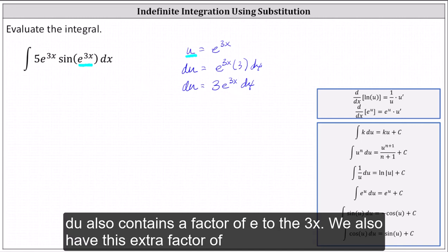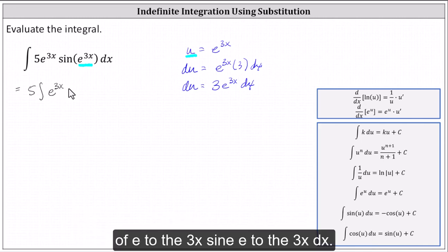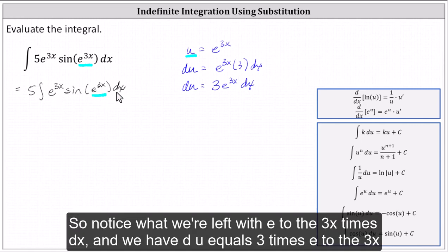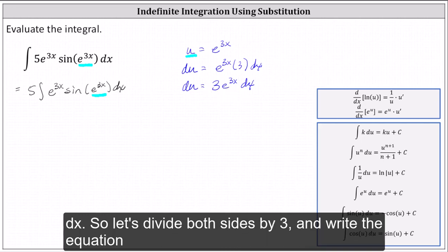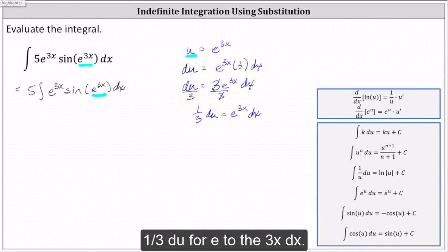We also have this extra factor of 5, so let's go ahead and factor that out and write this as 5 times the integral of e to the 3x sine e to the 3x dx. So notice we're left with e to the 3x times dx, and we have du equals 3 times e to the 3x dx. So let's divide both sides by 3 and write the equation as 1/3 du equals e to the 3x dx.